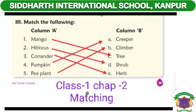C number: Tree (T-R-double-E). D number: Shrub (S-H-R-U-B). E number: Herb (H-E-R-B).